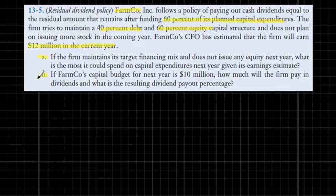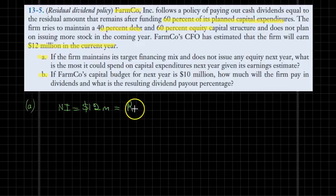Let's start with part A. Our company follows a residual dividend payout policy, and 60% of the total new investment comes from retained earnings while the rest goes to dividend payments. Those earnings not needed to fund investments will be paid in dividends. Because the firm earned 12 million dollars, that net income will ultimately be split between retained earnings and dividends.